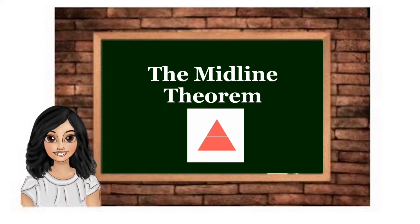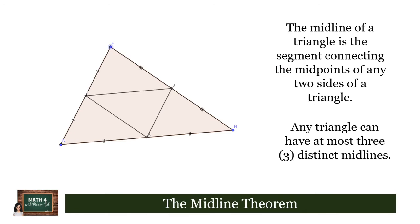The midline of a triangle is the segment connecting the midpoints of any two sides of a triangle. So in our figure here, segments IJ, JK, and IK are midlines. Any triangle can have at most three midlines.